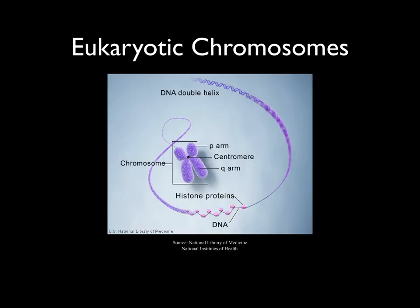This next figure shows the relationship between the DNA double helix, histone proteins, and the chromosome. Remember that each chromosome consists of a single DNA double helix. In this figure the DNA has been replicated, so we see a pair of sister chromatids attached at the centromere.